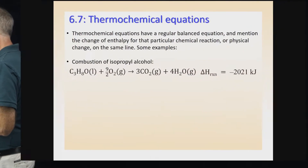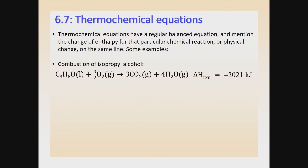One example of this is the combustion of isopropyl alcohol. If you look carefully at that chemical equation, that first formula C3H8O is the formula for isopropyl alcohol. It's a combustion reaction because the isopropyl alcohol is reacting with oxygen on the left side, producing carbon dioxide and water as products. On the same line is mentioned an enthalpy change for this particular reaction, and that value is negative 2021 kilojoules.